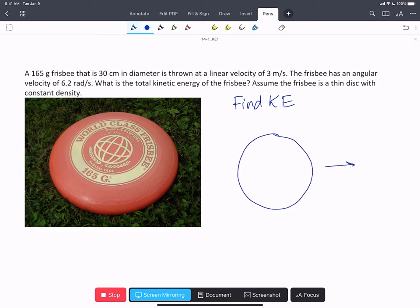We're told that the frisbee has a linear velocity, which will be the velocity of the center of gravity, and the magnitude of that velocity is 3 meters per second.